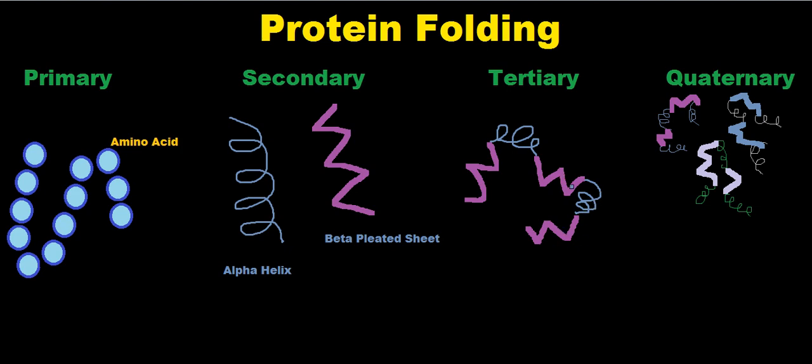And then once multiple chains of these side chains start interacting with each other, that's when it becomes quaternary protein folding.